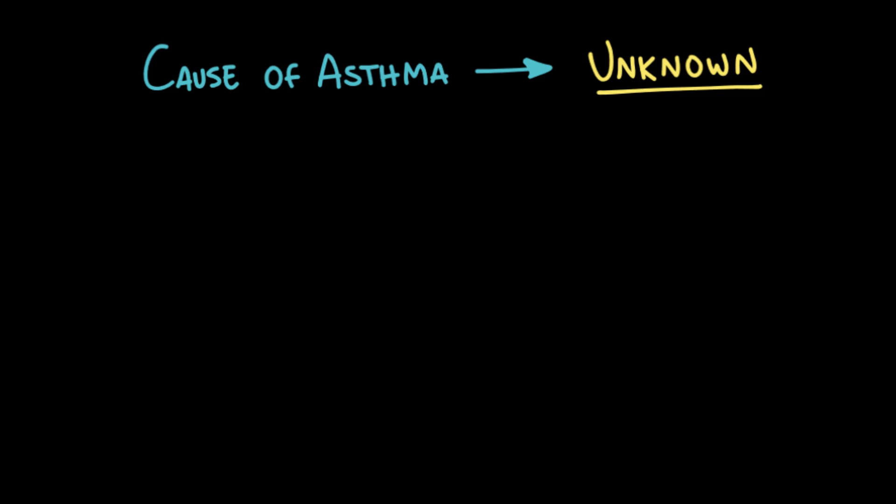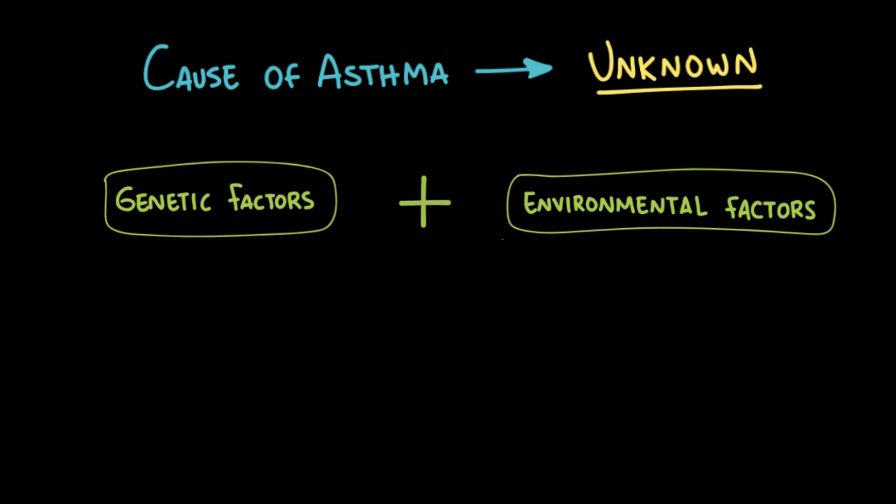Now, the exact cause of asthma is unknown, but it's believed to be a combination of genetic predisposition and environmental factors. Certain genes influence immune responses, and having a family history of asthma increases the risk. Regarding environmental factors, exposure to allergens, air pollution, and respiratory infections early in life can increase the risk of developing asthma, especially in people who are genetically predisposed.